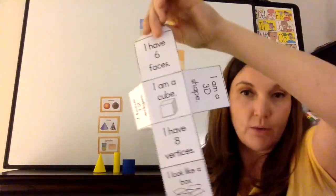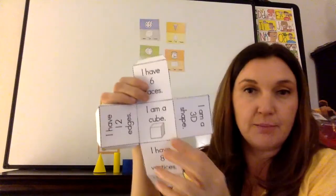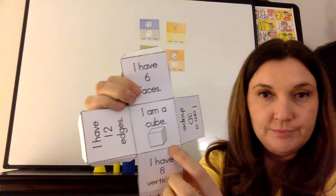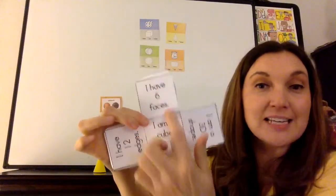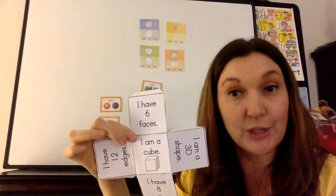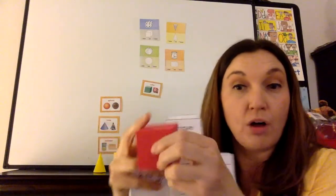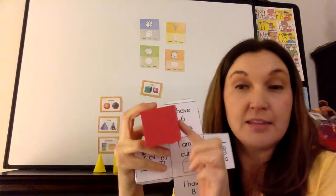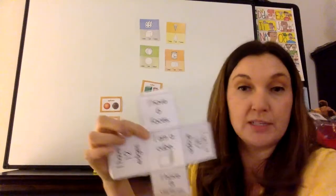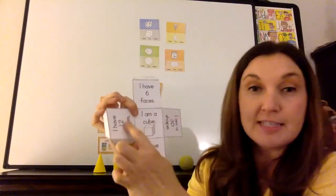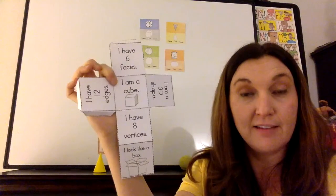All right, we're going to go over your shape. So it says, I am a cube. I have six faces. We're going to learn a new word. With three-dimensional shapes, we call these faces. So the faces, we're going to count the six faces. One, two, three, four, five, six. There are six faces.